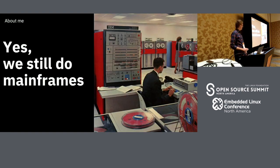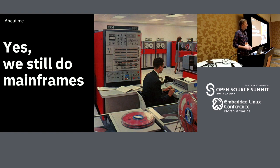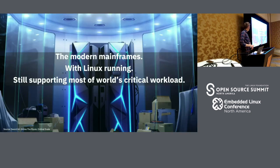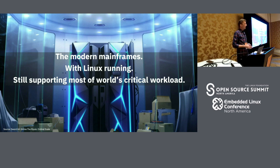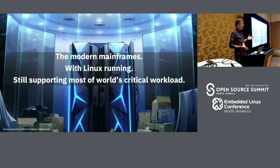Linux on Z — IBM Z is basically the mainframe. It's a pretty well-known name. This is a picture of the first mainframe released in the 60s, so it's a pretty old platform, but it is still very much in use. Currently it's a very modern, scale-up platform — you can imagine it as a very big server. The current version goes up to 170 CPUs, each running at 5.2 gigahertz. It's a really powerful machine.